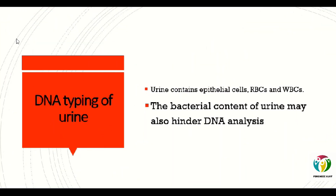The next test for urine is DNA typing, but the prerequisite is the presence of cells. Urine is primarily comprised of water and salts; some cellular content comes from the epithelial cells washed from the urinary tract, along with red blood cells and white blood cells. Urine stains are very dilute and have a very low cell concentration, so the likelihood of successful DNA analysis is very low. One factor restricting DNA typing is the low cell content; the other is the presence of bacterial content, which may hinder DNA analysis through degradation.